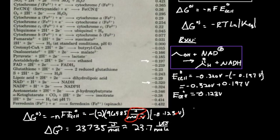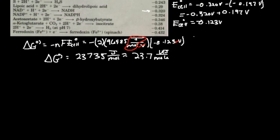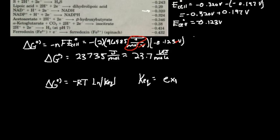The other thing I can do is calculate the equilibrium constant. The standard free energy change equals minus RT times the natural log of the equilibrium constant. Exponentiating both sides gives: K_eq equals exponential of minus delta G° over RT.